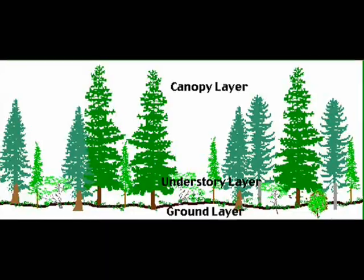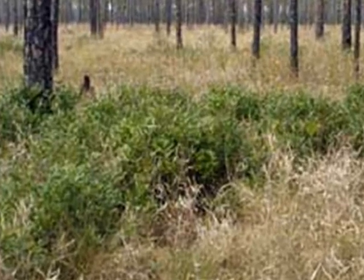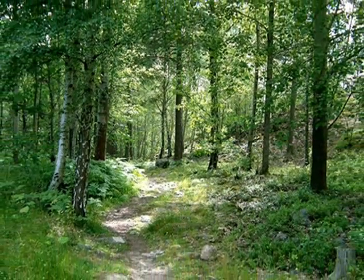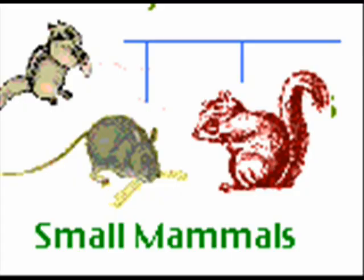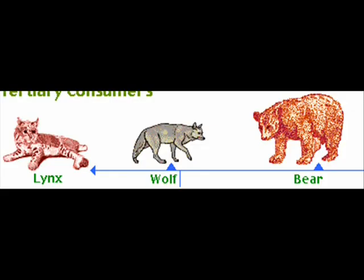Let's discuss the food chain! Notice the layers! You have your ground layer, your understory layer, and your canopy layer. Let's get back to the diagram. You have your small mammals, which are eaten by the birds, and predatory animals. You have your salmon, which is eaten by the predatory animals, and you have your elk, which is eaten by the cougar.